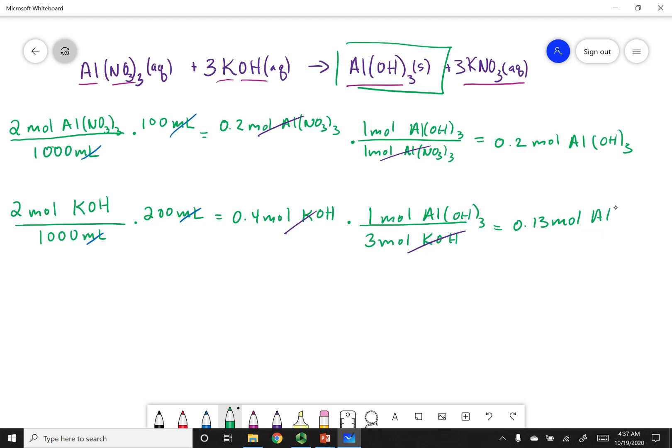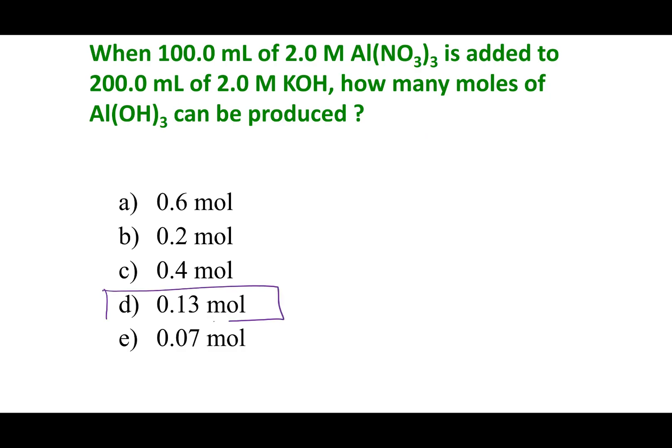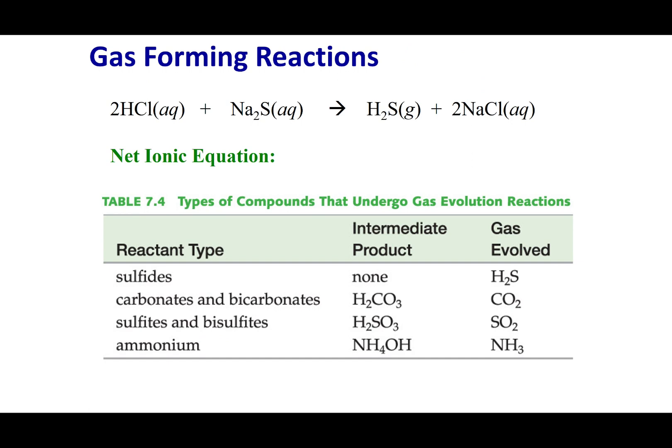Moles cancel out with moles and I'm left with 0.13 moles of Al(OH)3. So this is the least amount. So this is my theoretical yield. The KOH was my limiting reactant. So the correct choice was 0.13 moles being generated. Alright, gentle people.